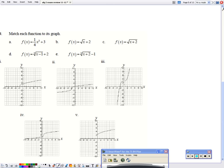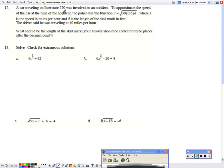All right, number 12. A car traveling on Interstate 270 was involved in an accident. To approximate the speed of the car at the time of the accident, the police used the function, and there's the function, where S is speed and D is the length of the skid mark. The driver said he was traveling 40 miles an hour. What is the length of the skid mark?